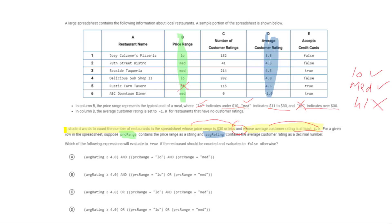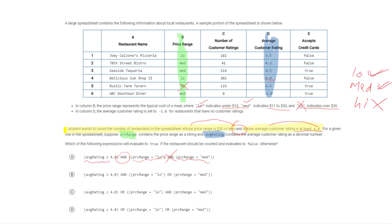We're writing a filter with two conditions: average customer rating greater than or equal to 4.0, and price range equal to low or med. Note that price range can only be one value at a time, so we use 'or' for those two options. The correct answer is B: average rating ≥ 4.0 AND price range is low OR med. This covers both required properties together.